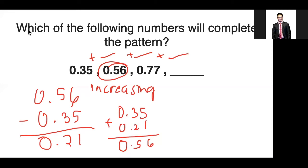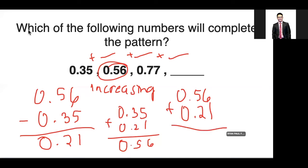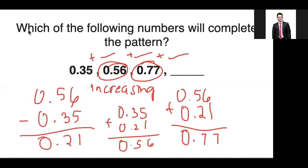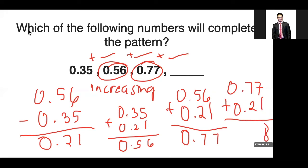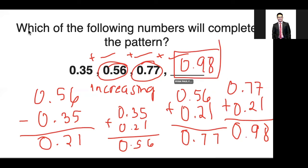Adding another 0.21 to 0.56 gives us 0.77, which is correct. To get the missing fourth number in the pattern, we take 0.77 and add 0.21, giving us 0.98. Therefore the answer is 0.98. Remember, we can also subtract numbers to get the missing number in a pattern.